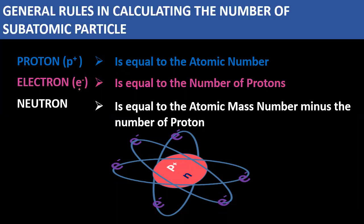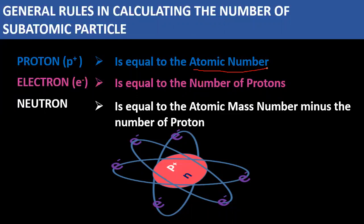So, the atomic number is also equal to the number of protons. Next, what about electrons? The number of electrons is equal to the number of protons. And for neutrons, the formula is: neutrons equal atomic mass minus the number of protons.